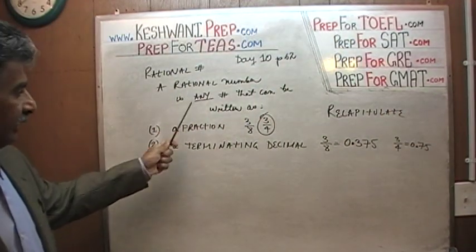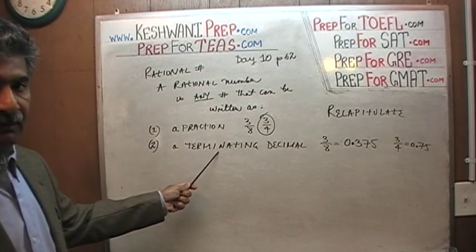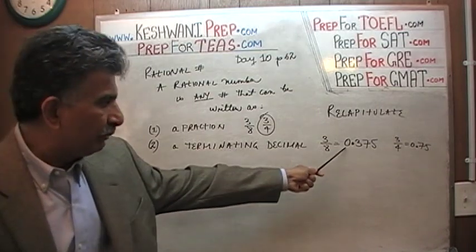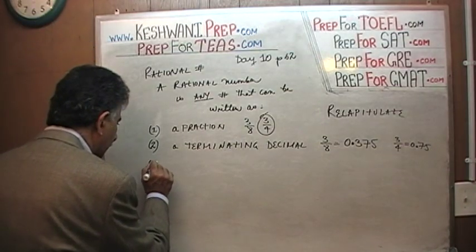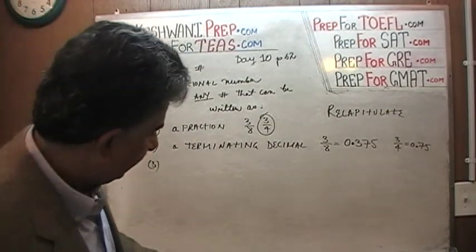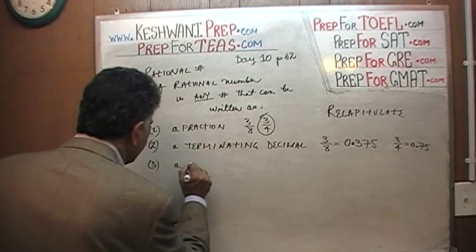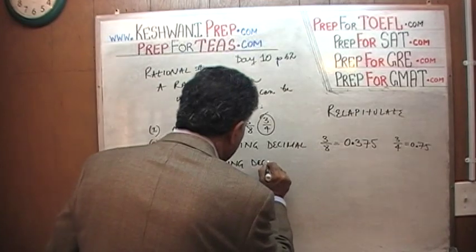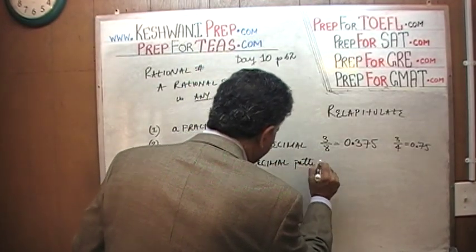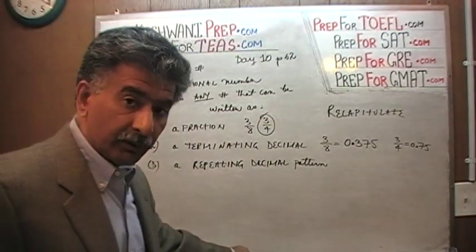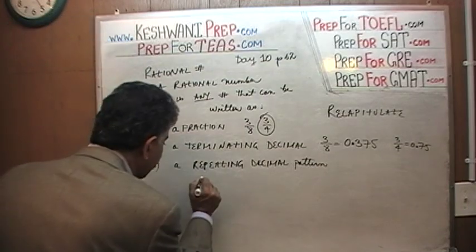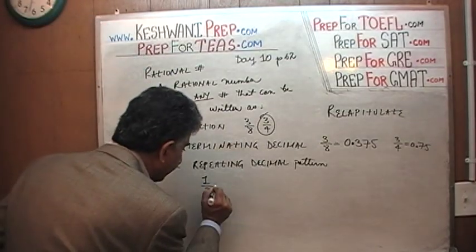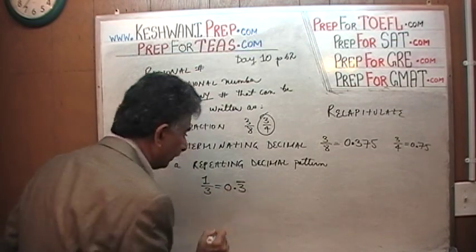What we said is that a rational number is a number that can be written either as a fraction, or it can be written as a terminating decimal — which of these two are one and the same thing. If it can be written as a terminating decimal then it can be written as a fraction. Or another way to look at a rational number is that it's a number that has a repeating decimal pattern. Here we're going to come across numbers that can be written as a fraction but never end. For example, one-third is of course written as a fraction, but if you write it in decimal it never ends — it's just 0.3 repeating.